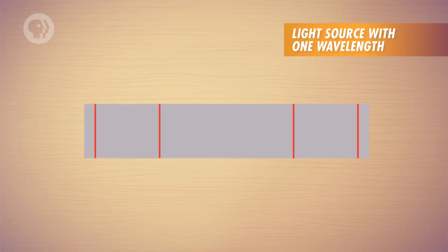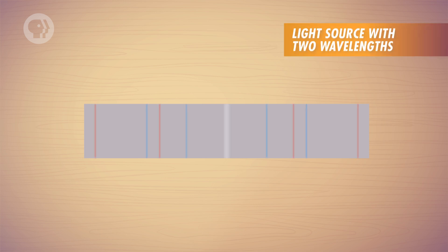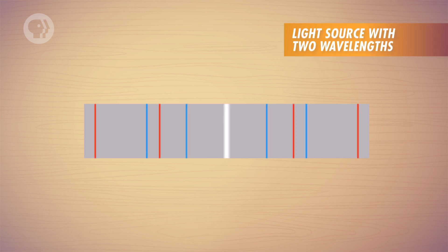Now, if the light source has light of only one wavelength, which is one distinct color, then all the lines would be the same color and would be evenly spaced. But if you have a light source with two wavelengths, then you'll get multiple sets of bright lines, whose color and locations will depend on the wavelength.